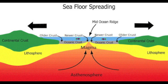As tectonic plates move away from each other, magma rises up from the asthenosphere and eventually cracks up the lithosphere, creating a ridge. The magma then cools and new crust is formed on both sides of the ridge, pushing the seafloor apart.